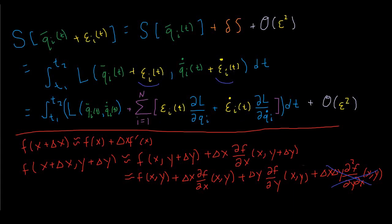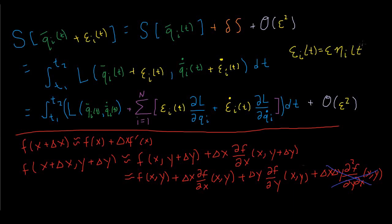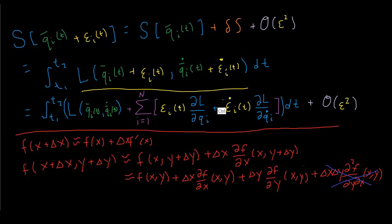So the expanded action gives us the integral from t1 to t2 of L of q sub i bar and q sub i bar dot, plus the sum from i equals 1 to n of epsilon sub i of t times partial L over partial q sub i, plus epsilon sub i dot of t times partial L over partial q sub i dot, all times dt, plus order epsilon squared terms. Epsilon sub i dot is also small because epsilon sub i of t equals epsilon times eta sub i of t, where epsilon is a small constant.